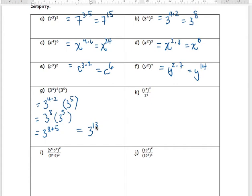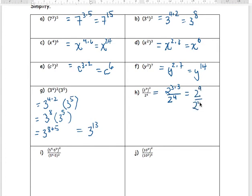Another example: 2 to the 3 in brackets to the power of 3, divided by 2 to the 4. First, clean up the top using power of a power — multiply 3 times 3 to get 2 to the 9. Keep the 2 to the 4 on the bottom. Now you have 2 to the 9 divided by 2 to the 4 — same base, so use the division rule and subtract the exponents. Final answer: 2 to the 5.